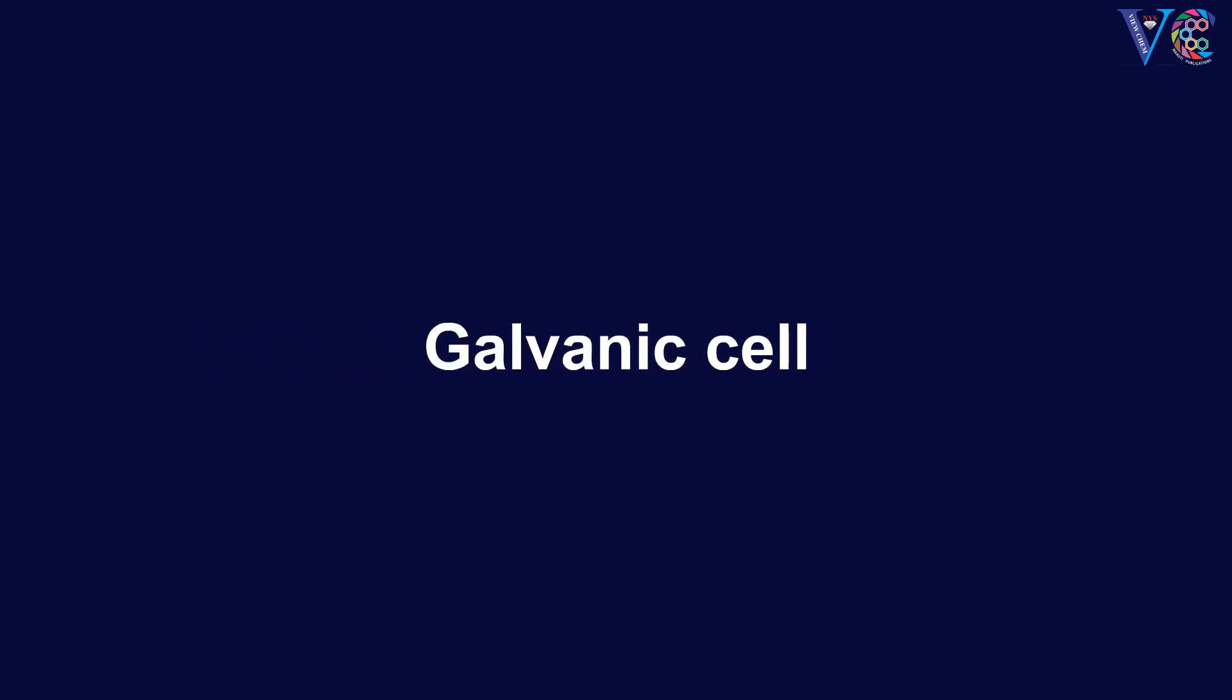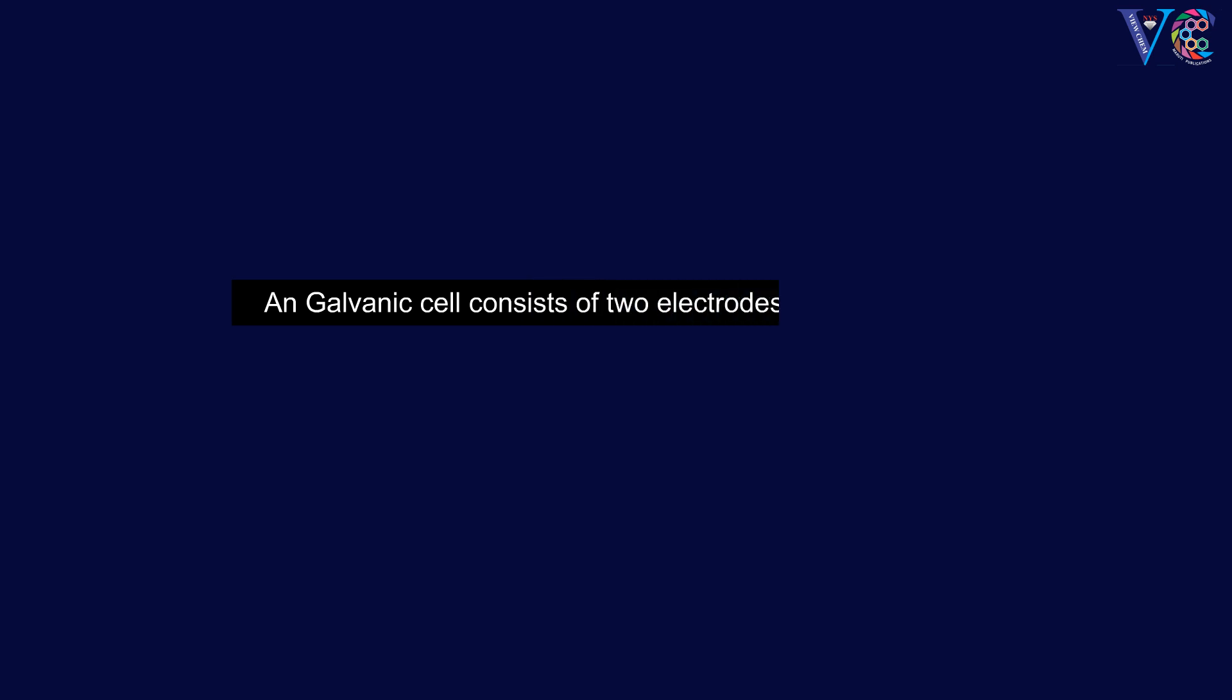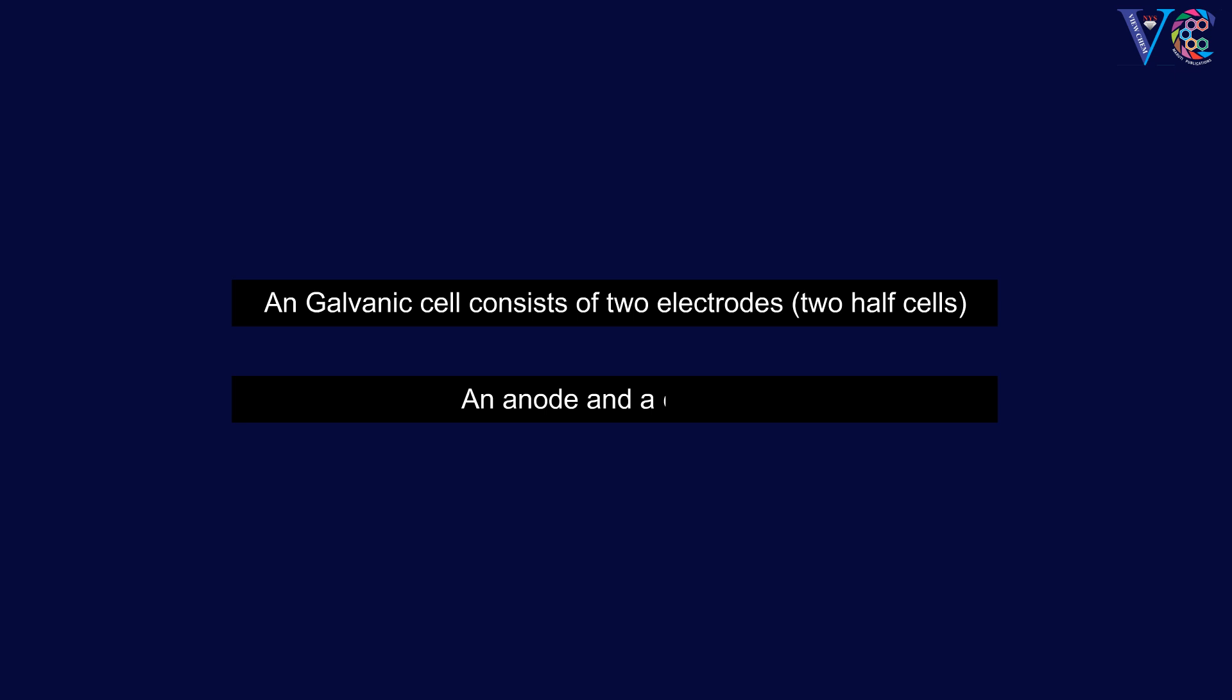Galvanic Cell. Galvanic cell converts chemical energy into electrical energy. A galvanic cell consists of two electrodes, that is, two half-cells, an anode and a cathode.